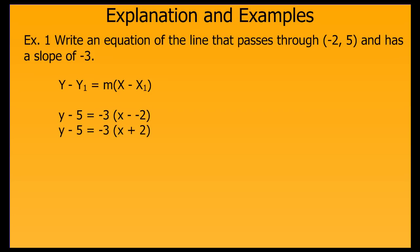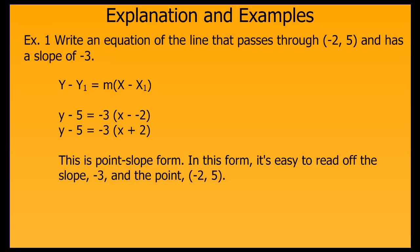We then simplify this slightly by simplifying x minus negative 2 into x plus 2. Note that while we could simplify this equation further by using the distributive property, we want to leave it like this if it asks for it in point-slope form. This form allows us to easily read off one point and the slope of this equation.